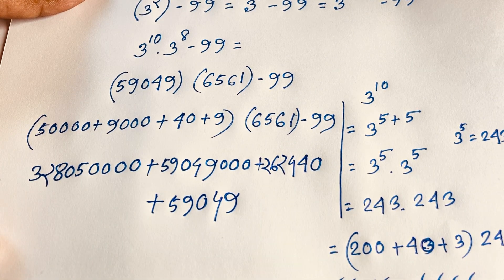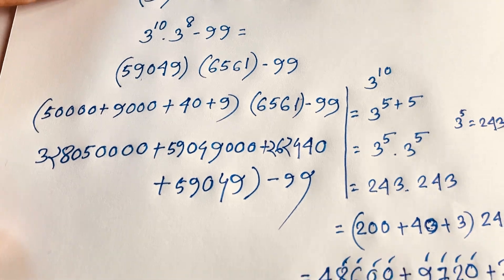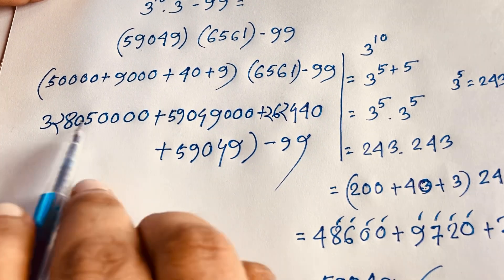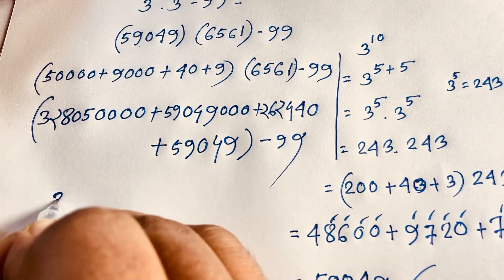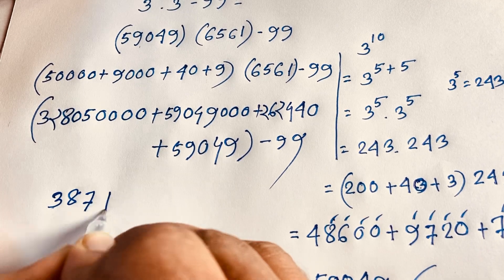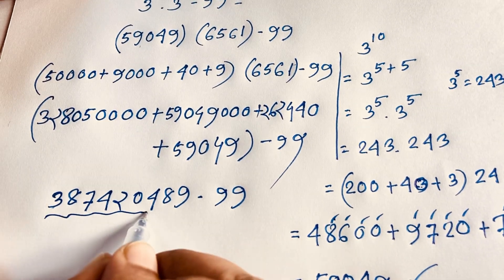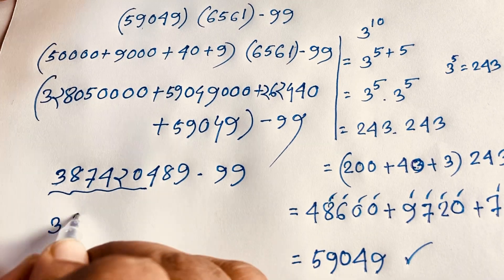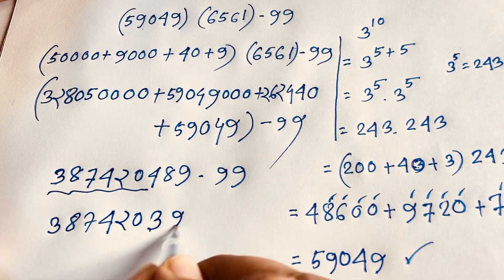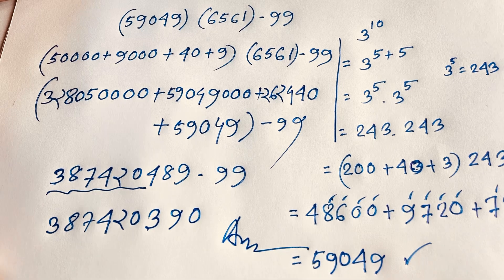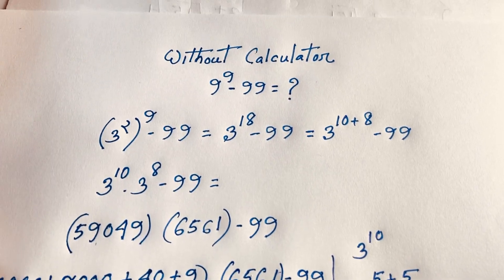So now we have 387420489 minus 99. Taking this minus 99 gives us 387420390. This is our final answer to this maths question. Thank you all. If you enjoy this video, please subscribe to my channel for other interesting videos. Goodbye, take care.